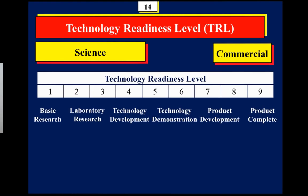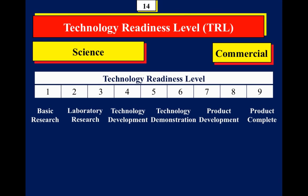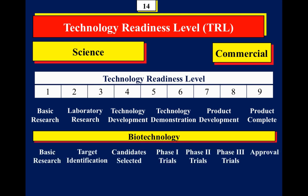This slide shows more common terminology: basic research, laboratory research, technology research, and technology demonstration — terms sometimes used and positioned within the TRL table. Looking at the biotechnology sector, the ERTO document compares clinical trial phases to TRL levels: phase one trials correspond to roughly TRL five to six, and phase two trials to TRL seven and beyond.